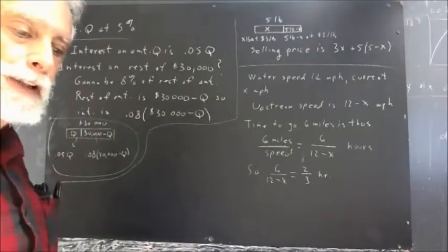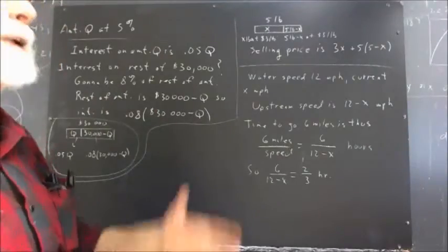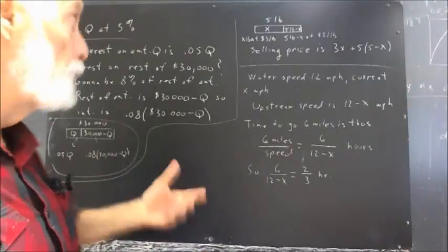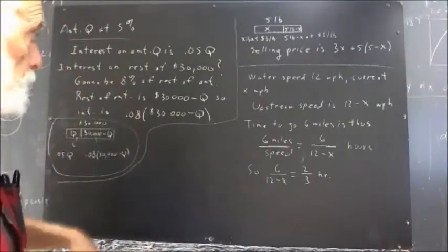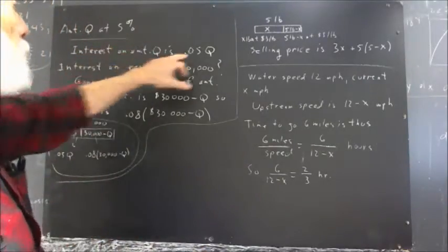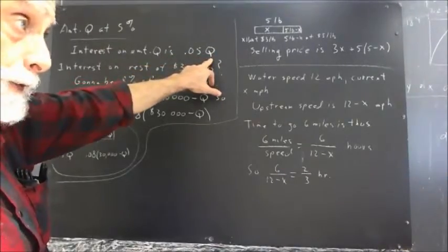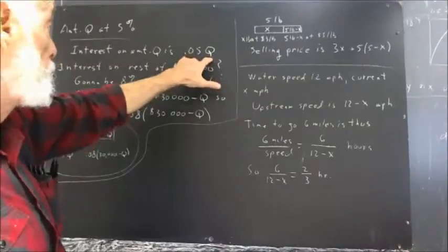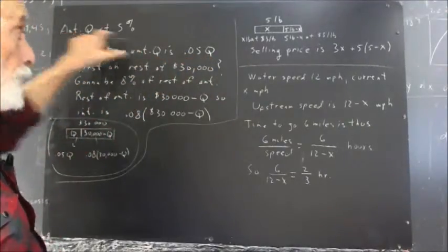If you invested $8,000 at 5%, how much interest would you get? You'd get 5% of $8,000, or $400 if I did my arithmetic right. So you take 5% of whatever amount you invest, and Q stands for the amount you invest, and that's how much interest you get on that amount Q.